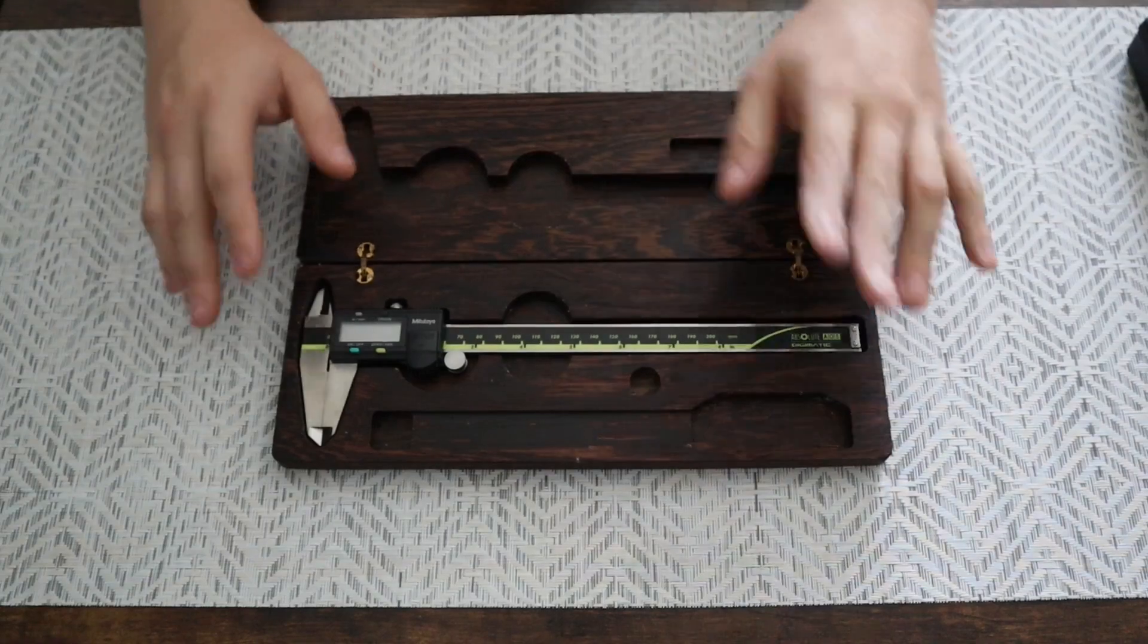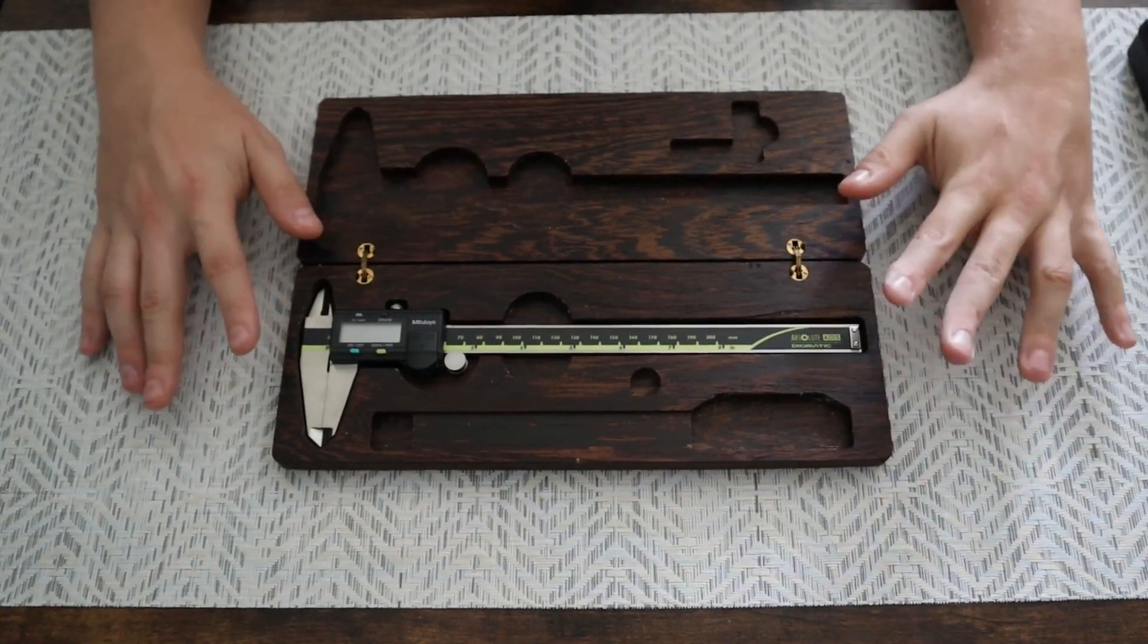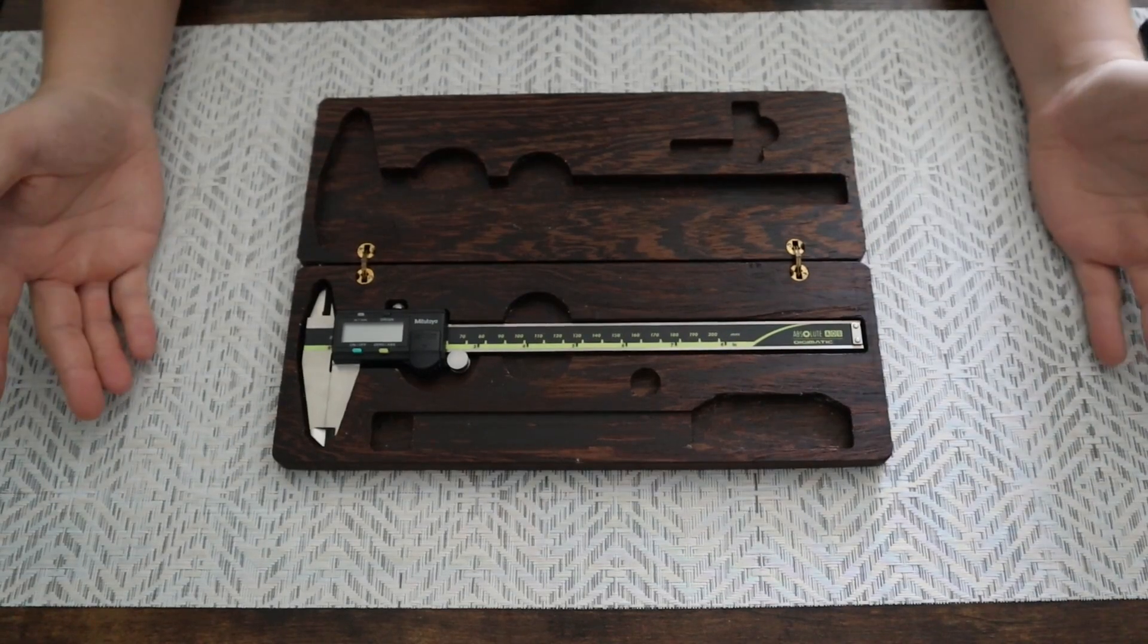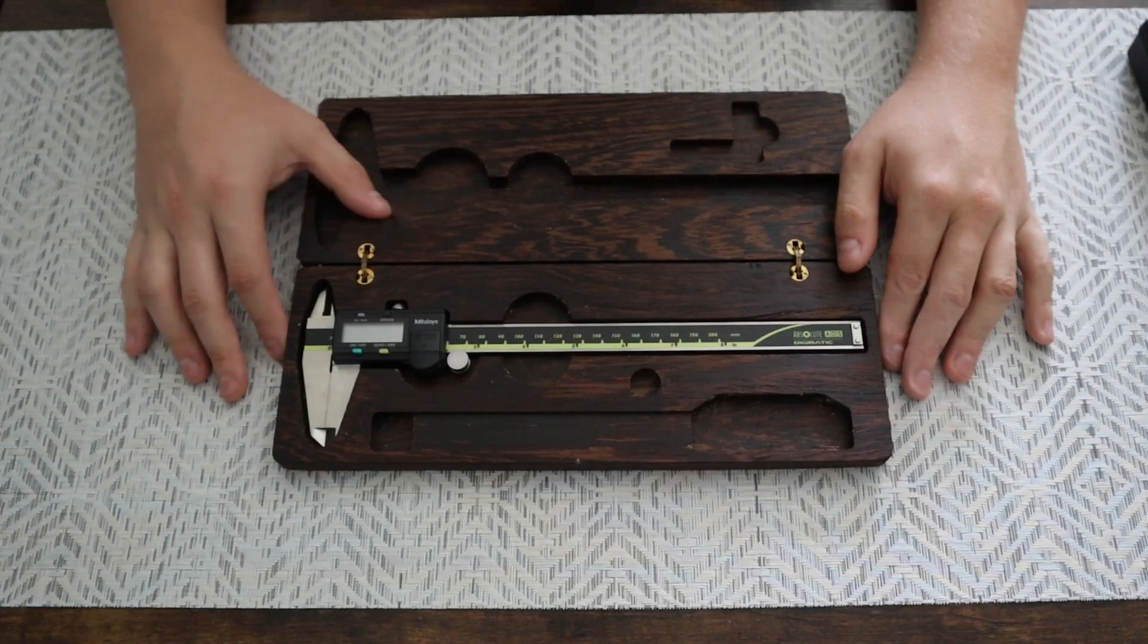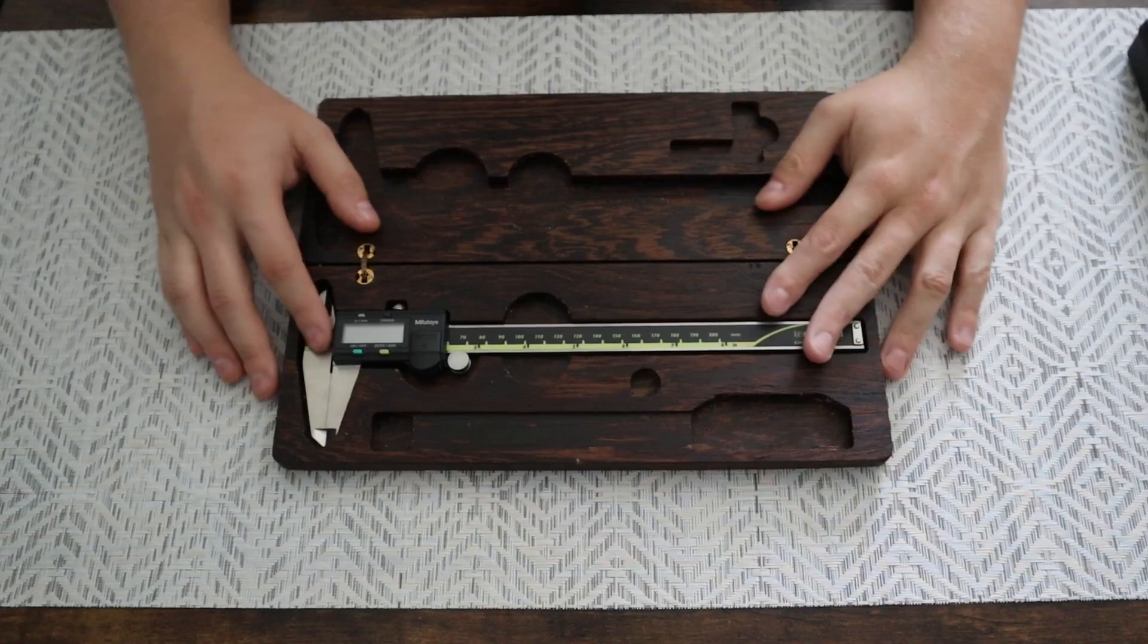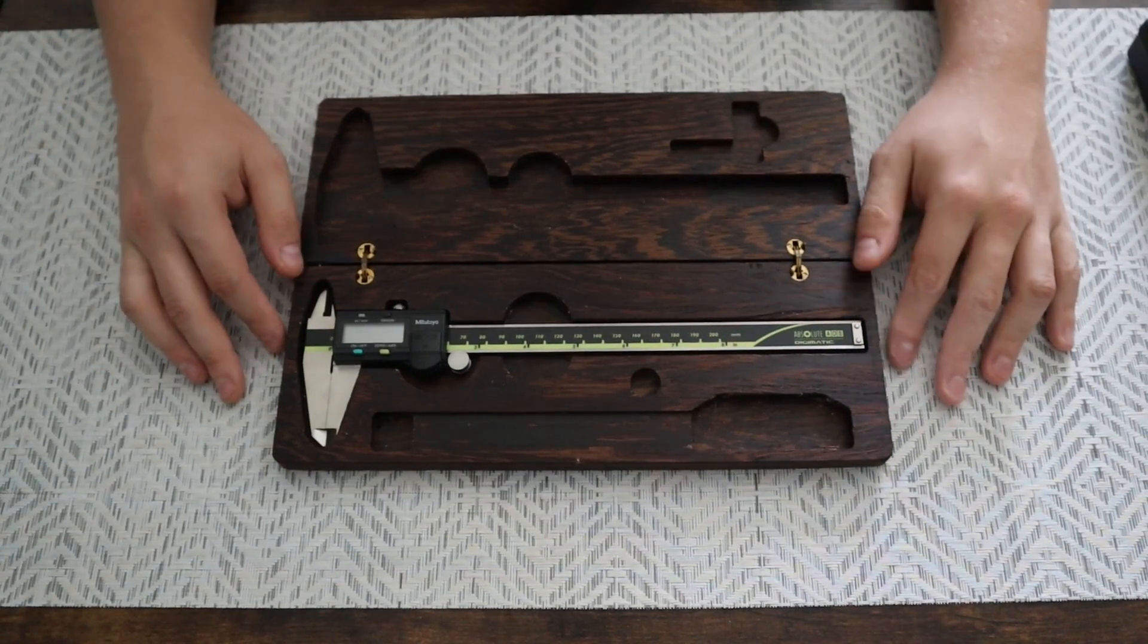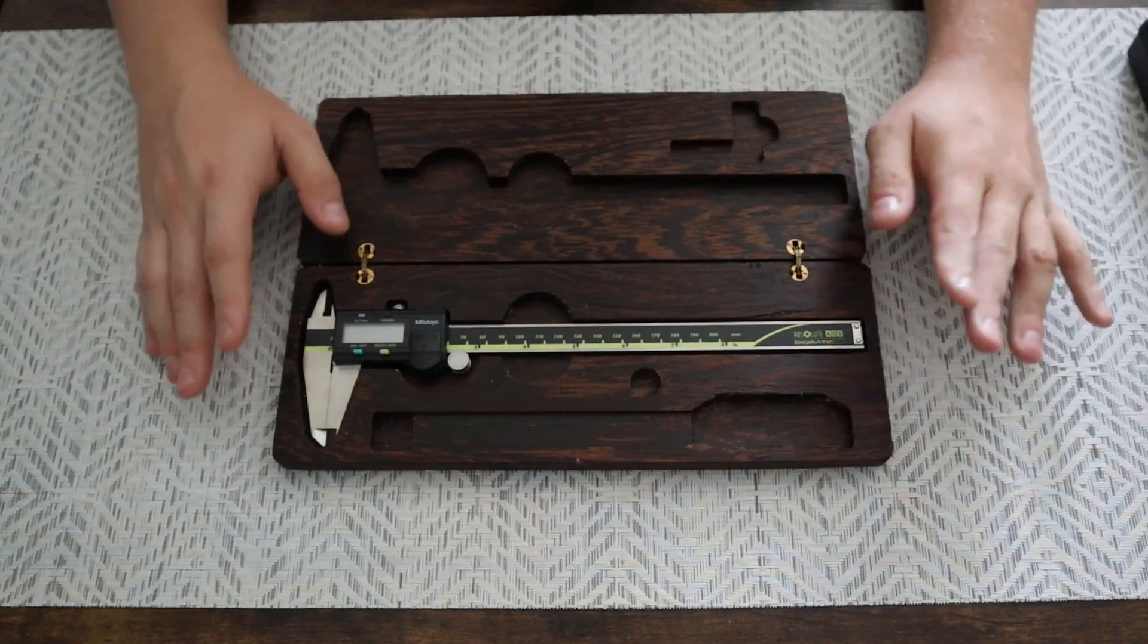I do want to remachine this. I want to try wenge again, but wenge is pretty expensive as woods go. This case, just in material, because of how I had to buy it at the time, came out to like fifty dollars, just material, not even counting time or anything. Not that I would count time for this, but not counting time. So I might try walnut. I think walnut is a pretty good wood. I could try maple. I'll try something else in the future.